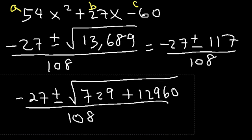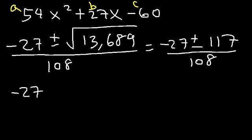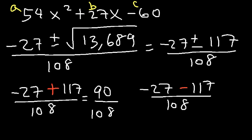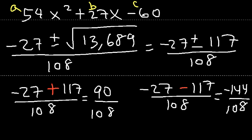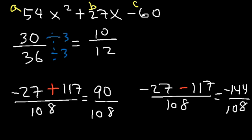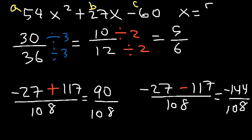Separating into two equations: negative 27 plus 117 equals 90, and negative 27 minus 117 equals negative 144, both divided by 108. Reducing 90 over 108: divide by 3 to get 30 over 36, divide by 3 again to get 10 over 12, then divide by 2 to get 5 over 6. So one answer is 5 over 6.